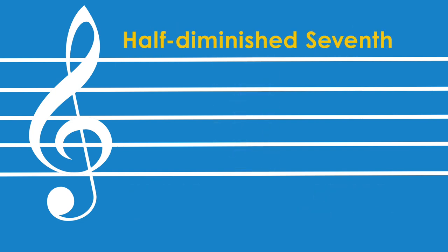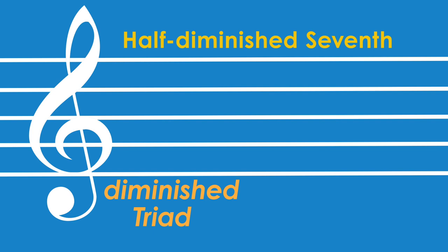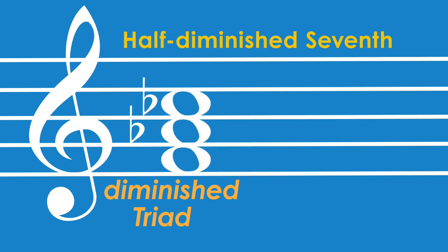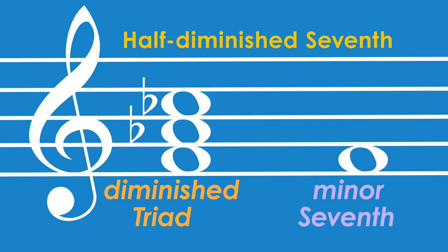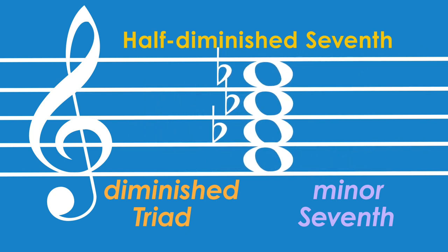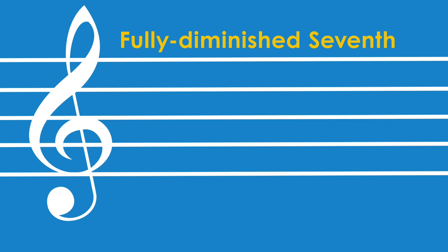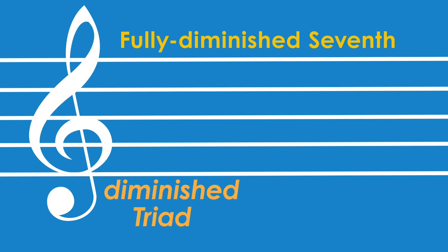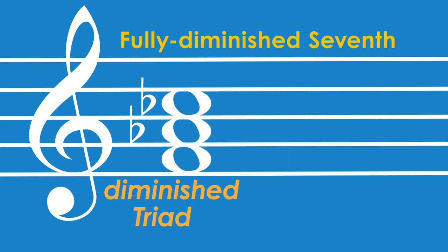The fourth one is called a half-diminished seventh. It's made of a diminished triad and a minor seventh. The last one is called a fully diminished seventh. It's made of a diminished triad and a diminished seventh.